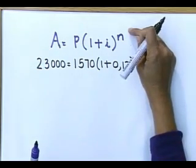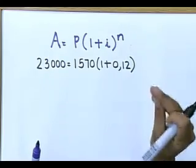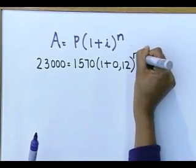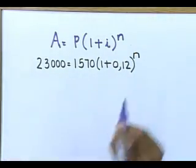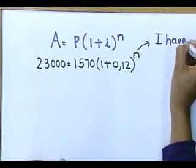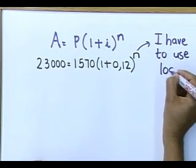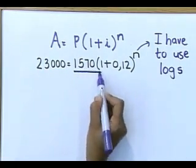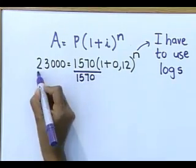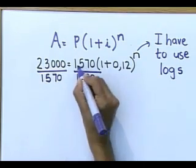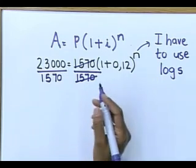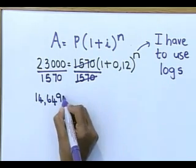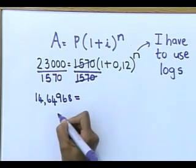Grade 12, if you are looking for N, tell yourself before the time: I have to use logs. I'm going to do this calculation very slowly. First, I divide both sides by 1,570. That 1,570 cancels, and dividing gives you 14.64968. Why am I not rounding to two decimal places? It is not my final answer — if you round multiple times, you get a rounding error. Keep five or six digits. Then 1 plus 0.12 gives you 1.12 to the power of N.